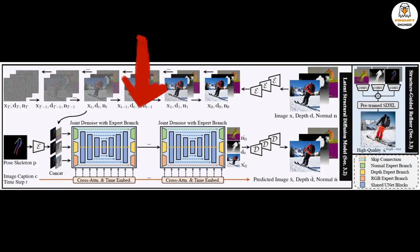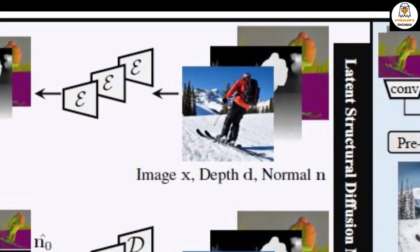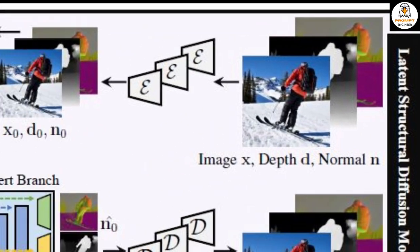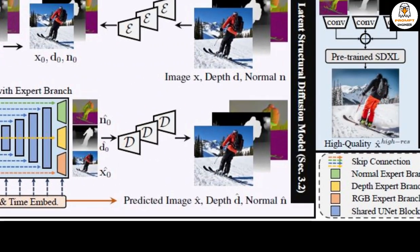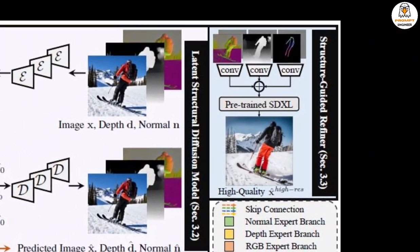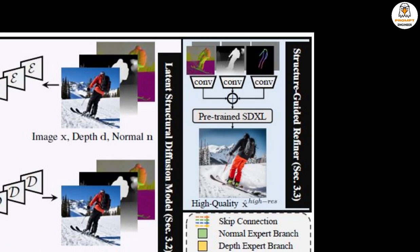Taking a closer look at the framework: in the latent structure diffusion model, the image X, the depth D, and the surface normal N are jointly denoised, conditioning on caption C and pose skeleton P, and then we get an image. In the structure-guided refiner, we compose the predicted conditions and increase the resolution to an even higher resolution.